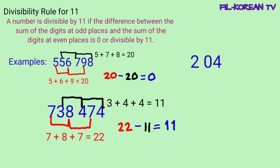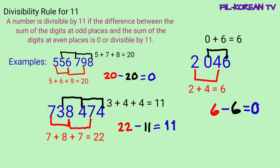Last example: 2,046. I-plus natin yung digits na nasa odd places: 2 plus 4 equals 6. I-plus din natin yung digits na nasa even places: 0 plus 6 equals 6. I-minus natin sila: 6 minus 6 equals 0. Yung answer ay 0, kaya naman yung given number na 2,046 ay divisible by 11.